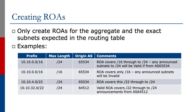For creating rows, care is needed. Only create rows for the aggregate and the exact subnets expected in the routing table. The slide shows some examples, and I will step through each of the examples to explain them.